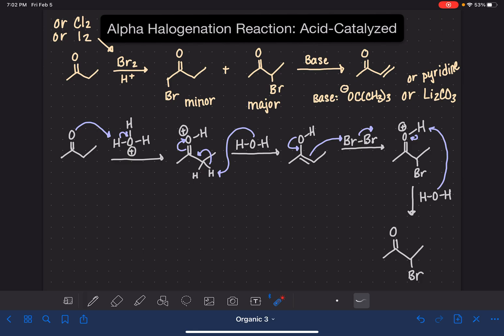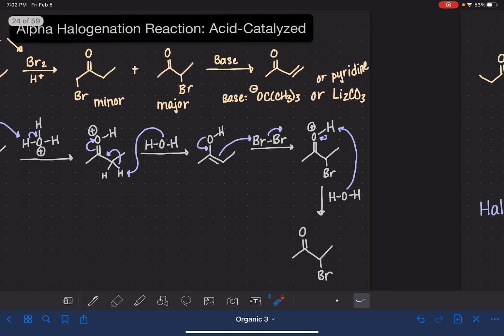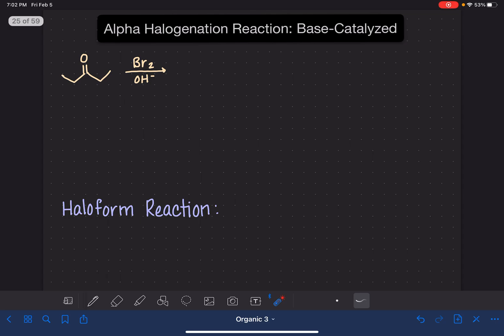Alpha halogenation can also take place under basic conditions. So we're going to take a look at that mechanism next. Just like with the alpha halogenation reaction, we can use the chlorine or iodine halogens in place of the bromine. And for this reaction, notice that I'm showing this with a ketone that happens to be symmetrical. And I'm showing this with alkyl groups that are not methyls. And that's one of the key parts of this reaction. So no methyl groups allowed on either end, either side of the ketone.